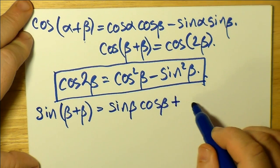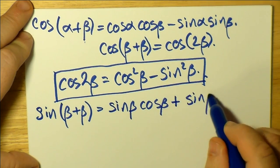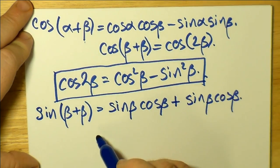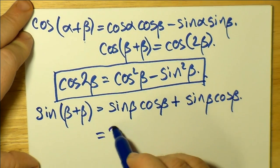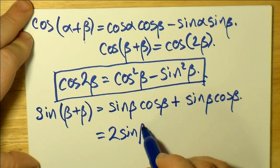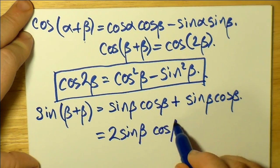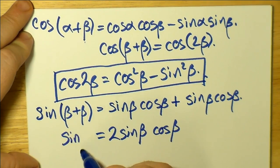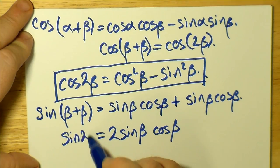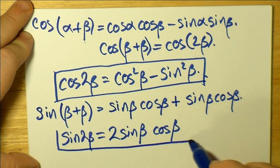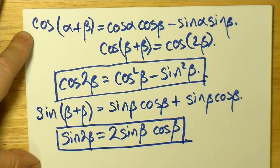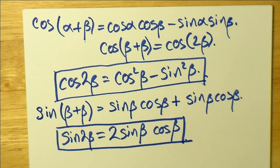For the double angle formula for sine, we get sin(β)cos(β) + sin(β)cos(β), which makes two identical terms, so it simplifies to 2sin(β)cos(β). There is no other variation for the double angle formula for sine, so sin(2β) = 2sin(β)cos(β).